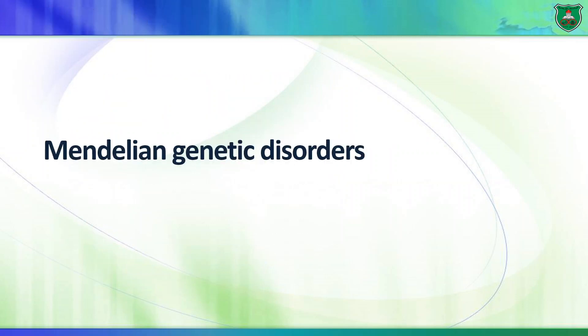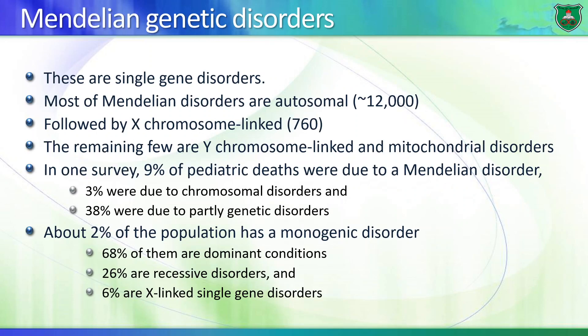Now let's start with the Mendelian genetic disorders. They are caused by single genes and are mainly autosomal disorders, meaning chromosomes other than the sex chromosomes — chromosomes 1 to 22 — are mainly involved. This is followed by X chromosome-linked disorders, then Y-linked disorders, and mitochondrial disorders. Nine percent of pediatric deaths are caused by Mendelian disorders. Overall, 38% are due to genetic or partly genetic disorders, and 3% are due to chromosomal disorders.